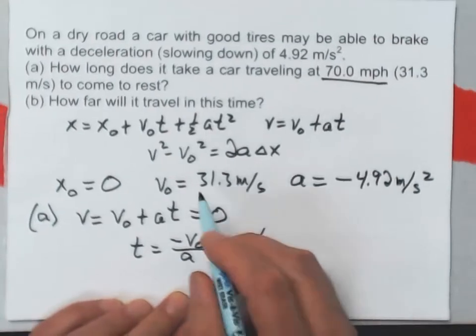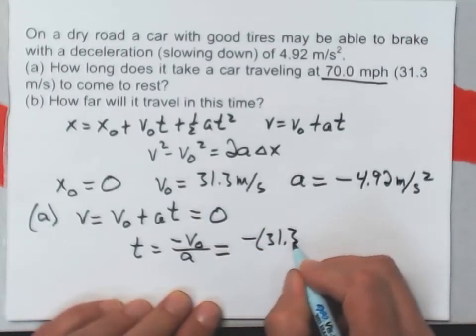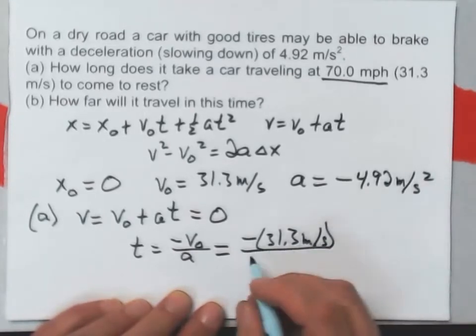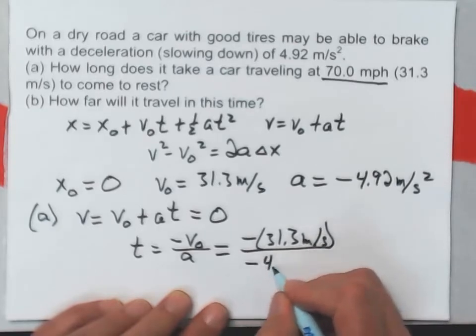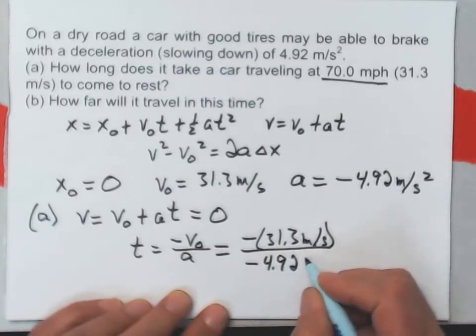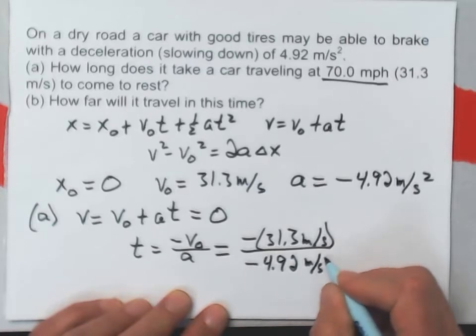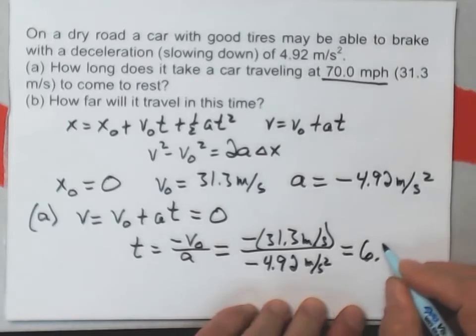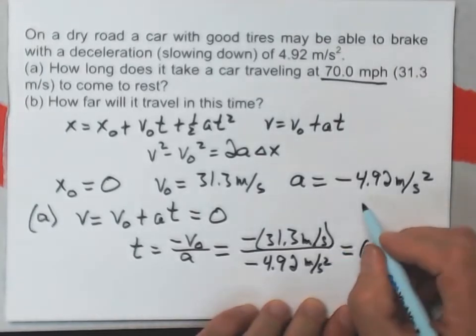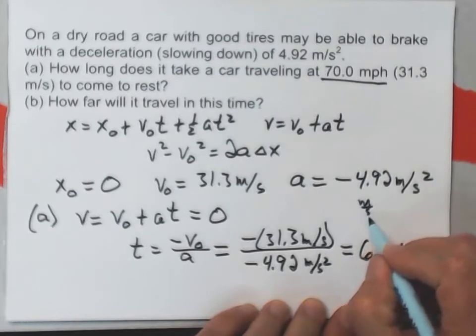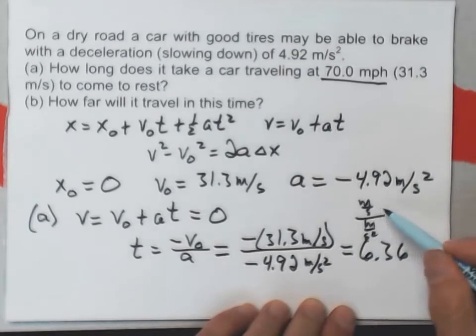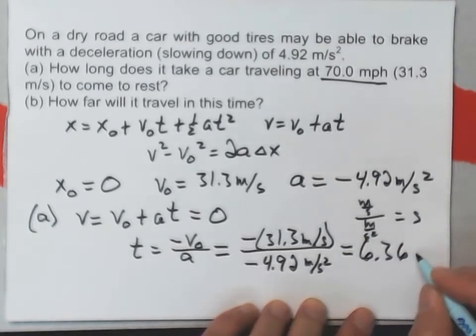Minus v naught was 31.3 meters per second. The acceleration is negative 4.92 meters per second squared. What I get for a result on that is 6.36. Now, unit-wise, I've got meters per second on top, meters per second squared on the bottom. If I invert that and multiply, I'll end up with seconds, so 6.36 seconds.